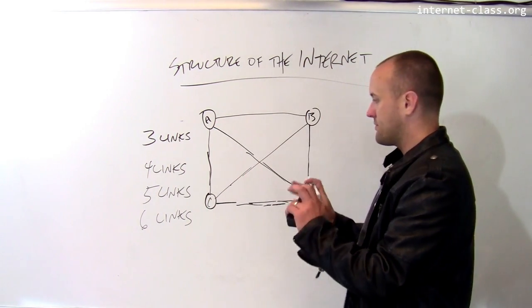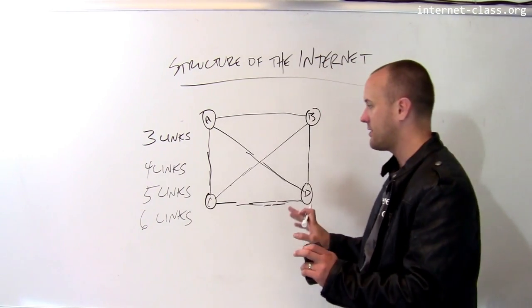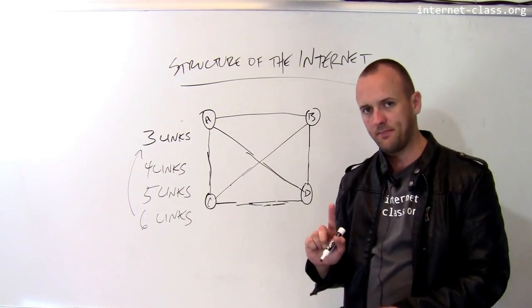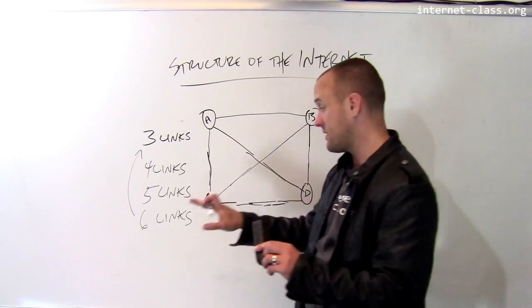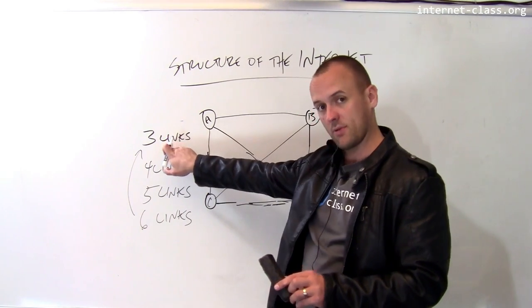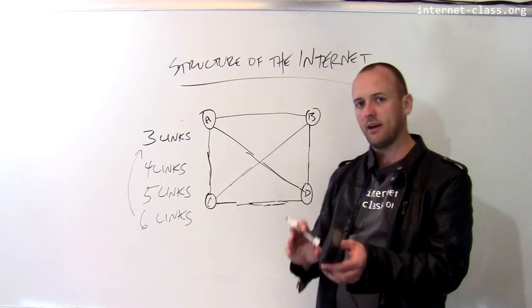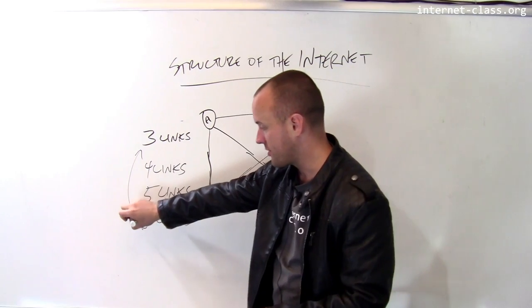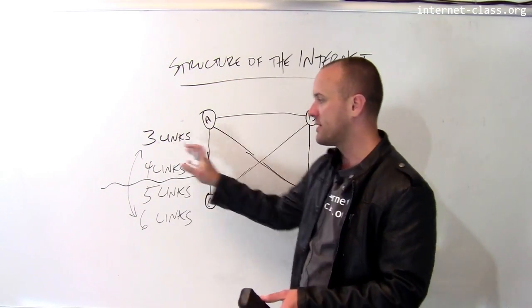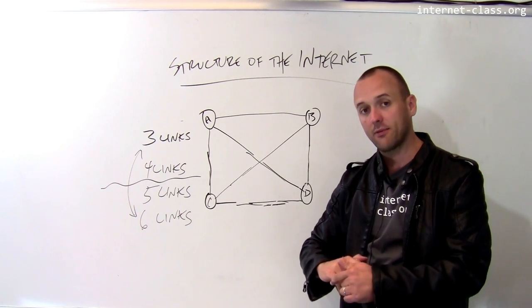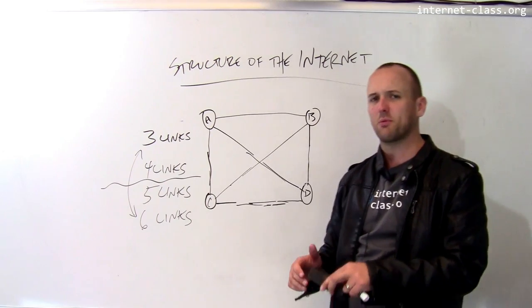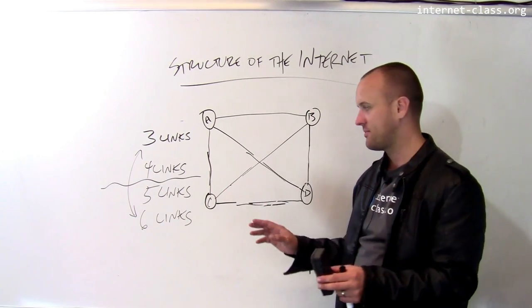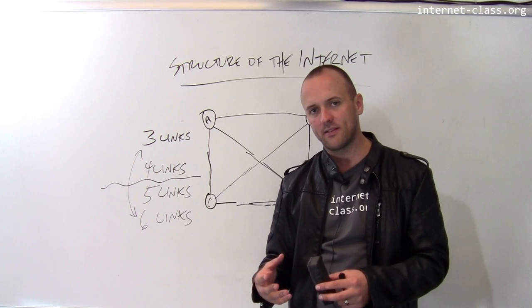The fundamental trade-off the internet has made — the sweet spot it tries to find — is the balance between a fully connected network, which is now twice as expensive as the original, and the cheapest network. In general, as we add links to the internet, we increase robustness and capacity, but also cost. Where we are today is somewhere in the middle: there are routing alternatives on the internet that provide robustness, but the internet is far from a fully connected network. To fully connect the internet, you would need billions of cables reaching every computer, which is obviously infeasible. The network we built today is a compromise between robustness and cost.